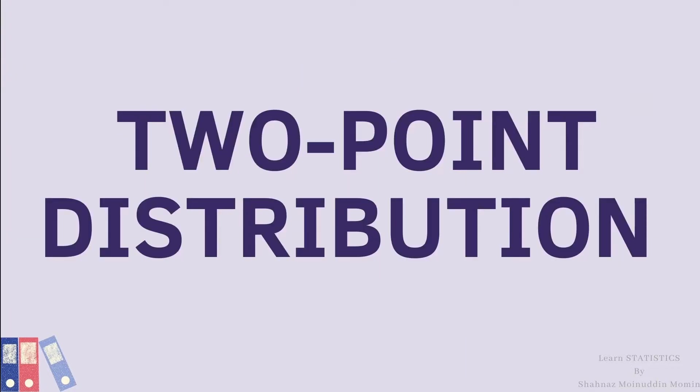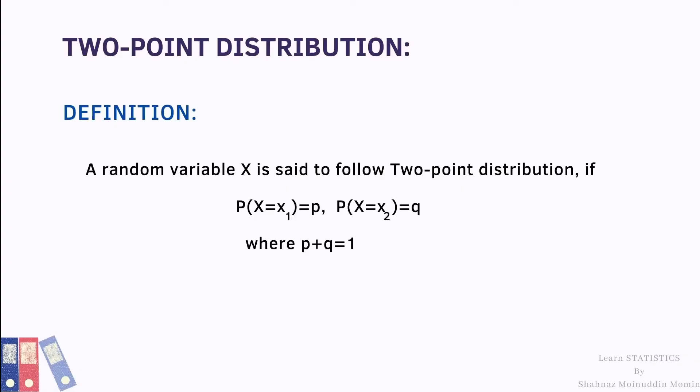In this topic we are going to learn the second distribution, which is known as the two-point distribution. In the two-point distribution, the total probability one is distributed on two points. Let us start with the definition of two-point distribution.